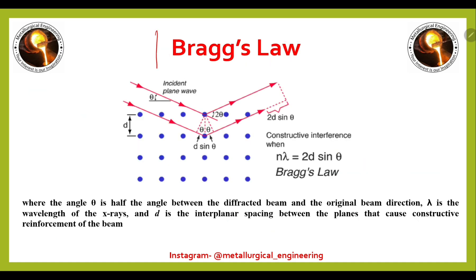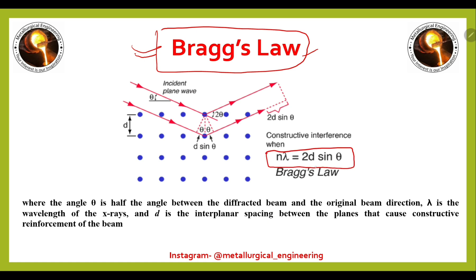The next topic is Bragg's law. In the GATE examination you can get one numerical problem on this topic. Bragg's law is: n·λ = 2d·sinθ. For the first reflection, n = 1, so the formula becomes λ = 2d·sinθ. Here λ is the wavelength of the target material — the target material is copper, chromium, cobalt, or sometimes molybdenum.